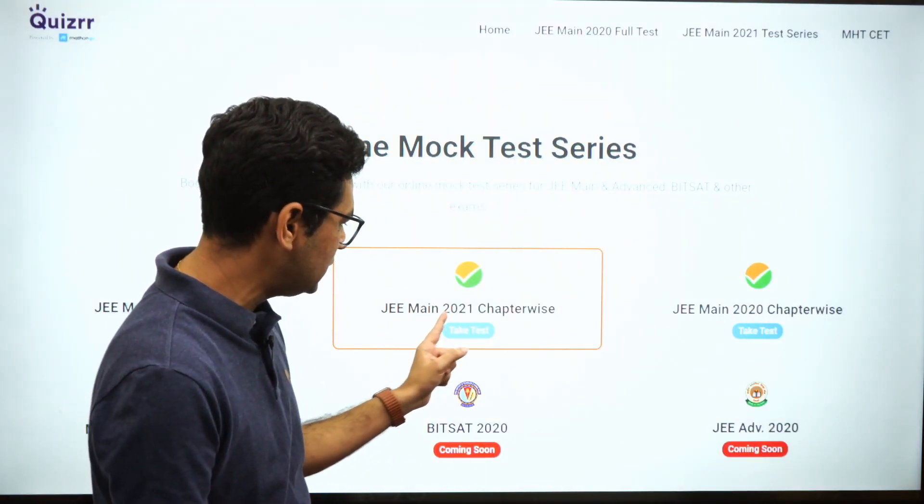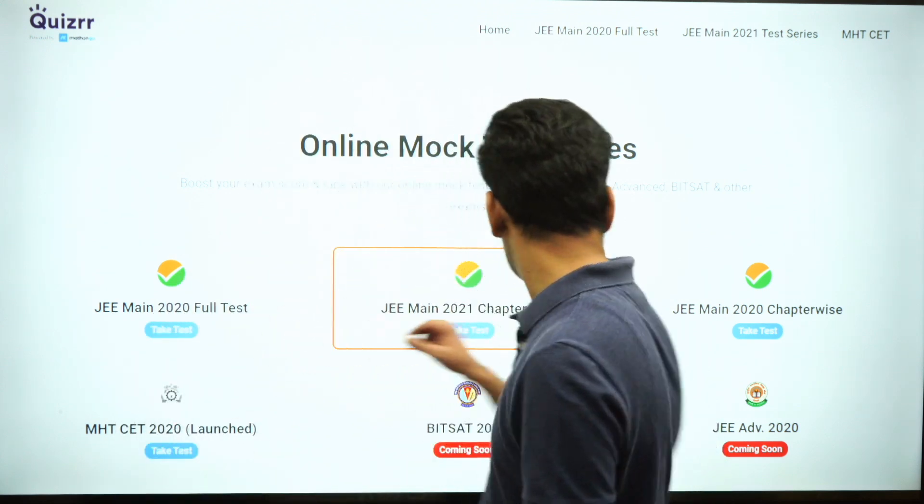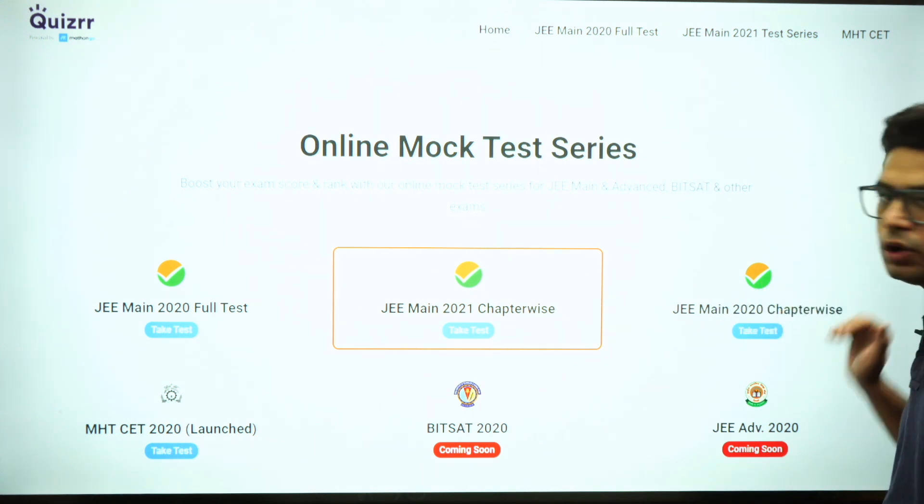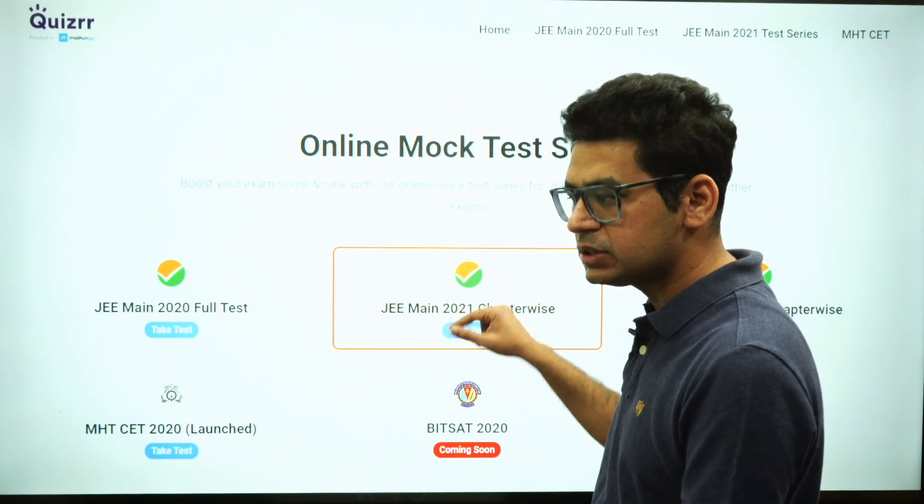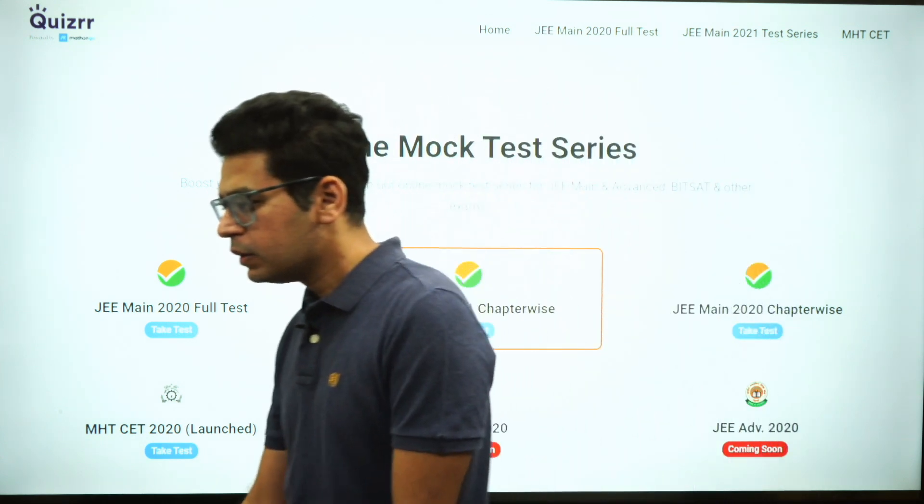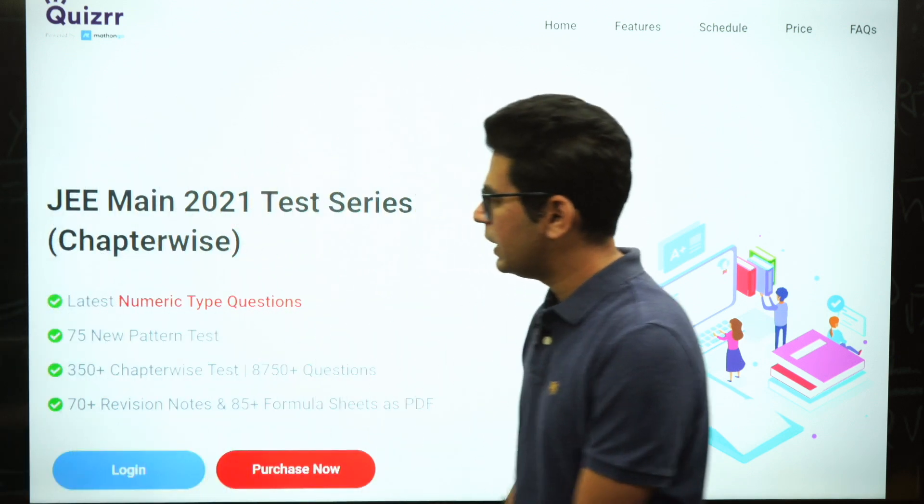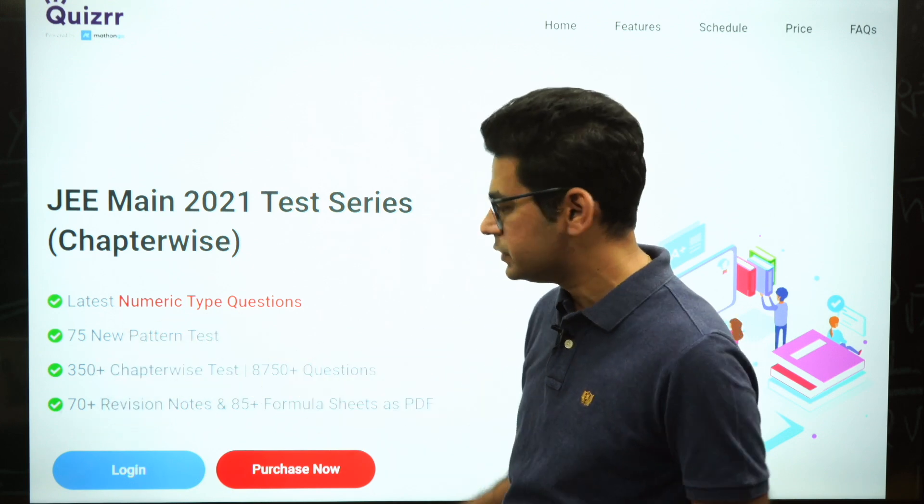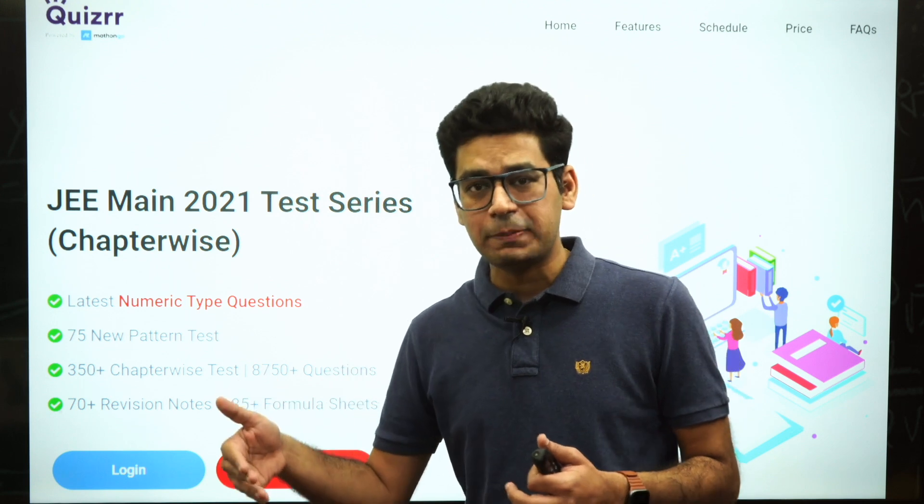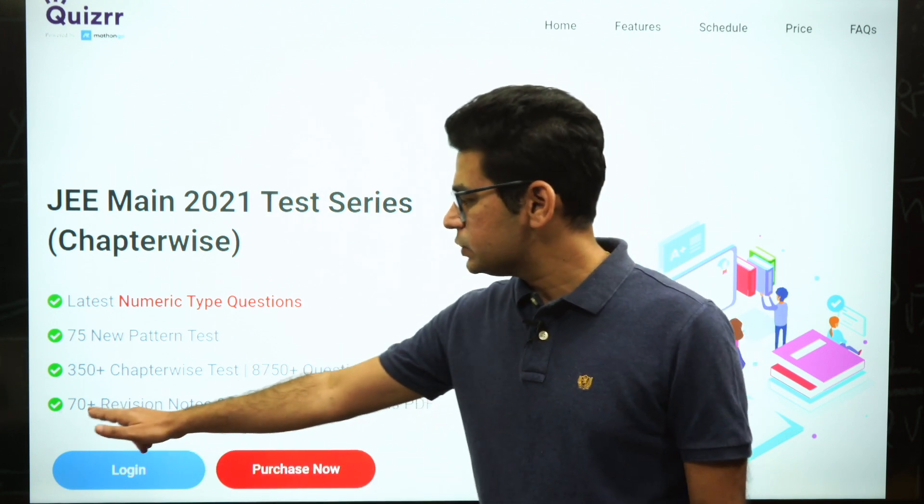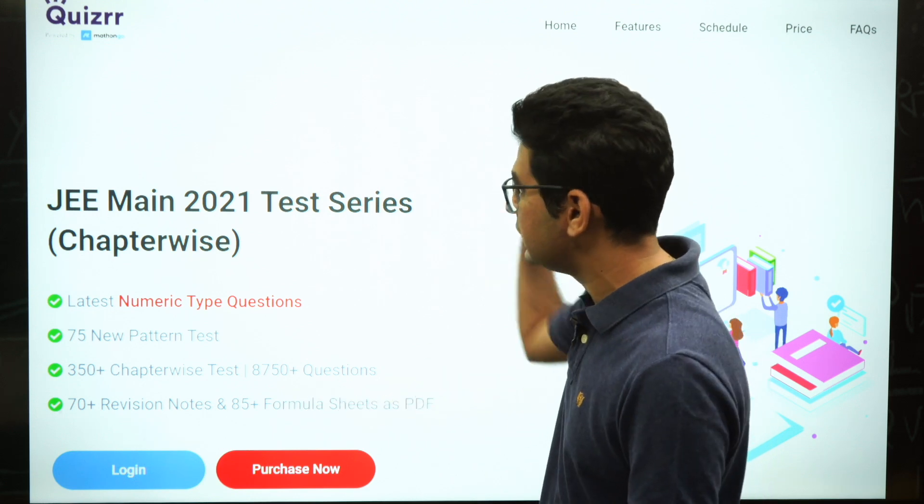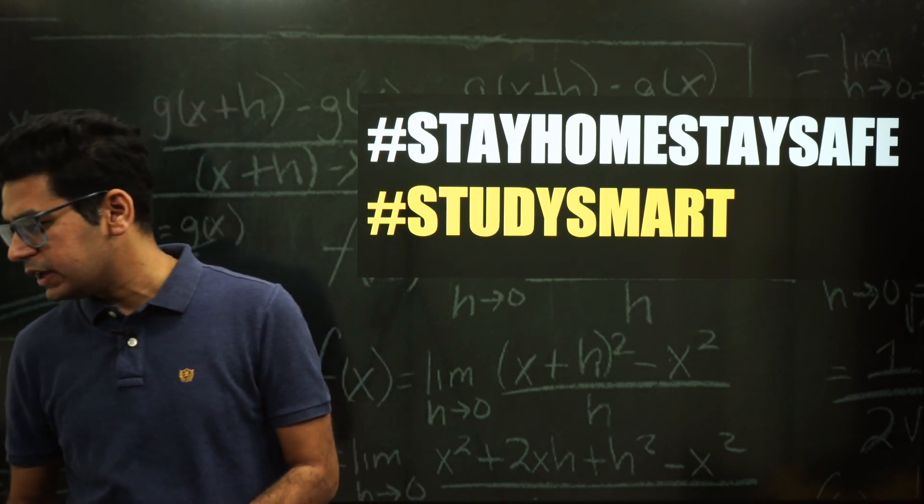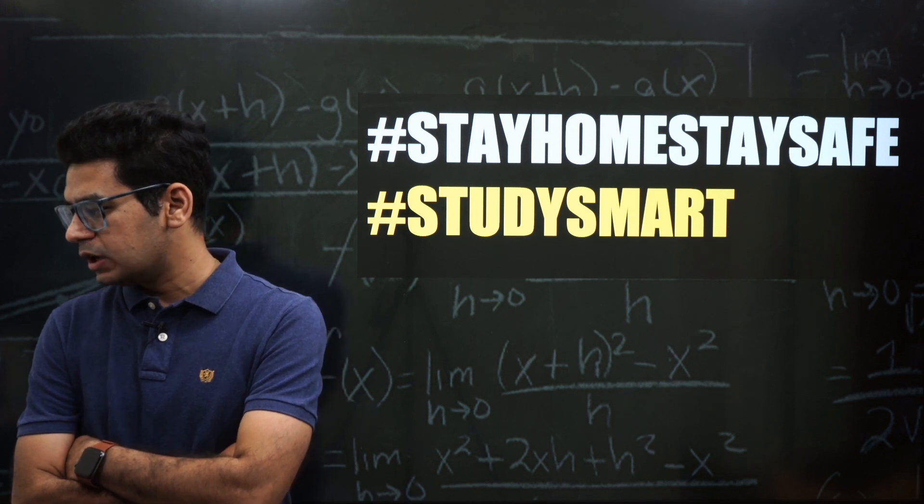This is the page if you want more details of the test series. This test series for JEE Mains 2021 - we already have JEE Mains 2020 chapter-wise running. This is for students who are going to write 2020 test; this is for students who are going to write JEE Mains 2021. This is what you'll be enrolled in. If you see this, you will have latest numerical type questions - 75 new pattern. Otherwise remaining ones will be 90 questions which you can practice because it's important to practice 30-30 questions so that your speed improves. Plus you'll also get 70 revision notes and 85 formula sheets on this platform only if you get enrolled.